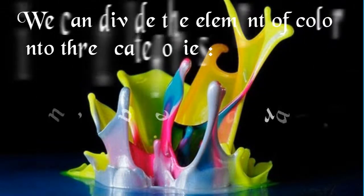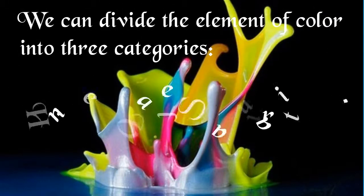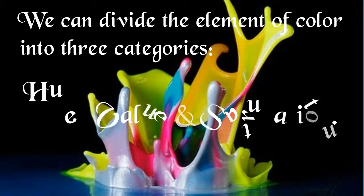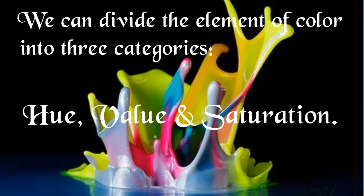We can divide the element of color into three categories: hue, value, and saturation.